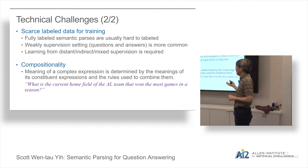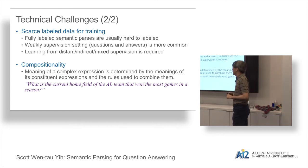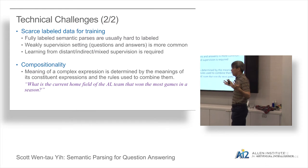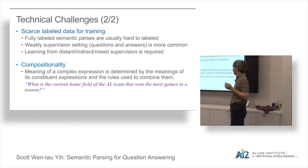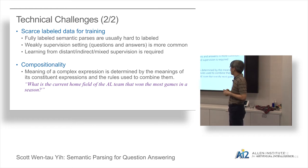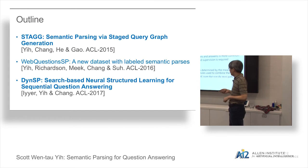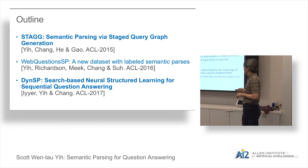Finally, compositionality is one of the terms academics love to discuss. Essentially it means the meaning of a complicated expression is determined by the meanings of its constituent expressions and the rules for combining them. We'll talk a little more about this issue later.